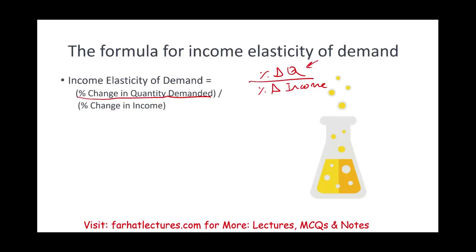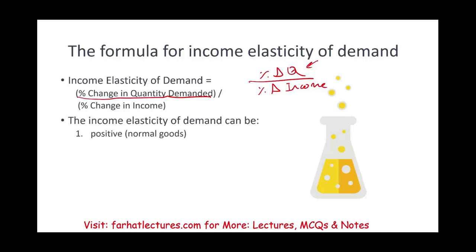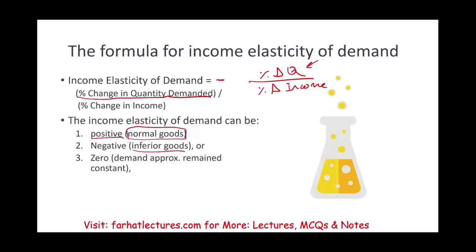This income elasticity ratio can be positive — usually positive for normal goods — or negative, usually for inferior goods, or it could be zero. Zero means the demand approximately remains the same with the change in income, basically no effect.